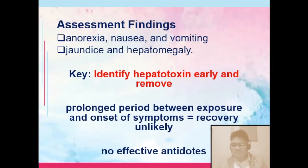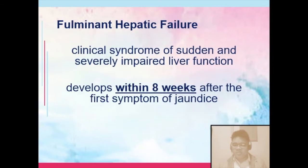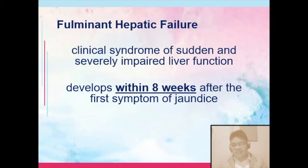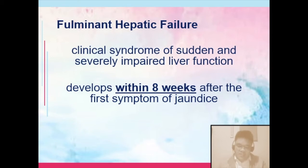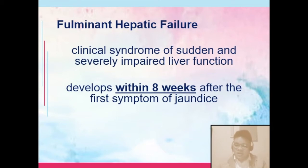Antidotes are less likely to be used in this case. Next, we have fulminant hepatic failure. This refers to a clinical syndrome of sudden and severely impaired liver function. Once there is impairment of liver function, you might consider the presence of hepatitis, toxic hepatitis, or drug-induced hepatitis. If a patient has sudden and severely impaired liver function without any other known cause, you would suspect the development of fulminant hepatic failure.